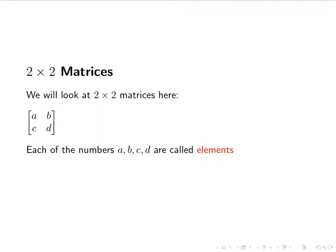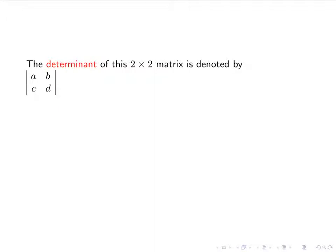Later on, we're going to look at a 3 by 3 matrix, which will have 9 elements. What we're going to do first is look at what's called the determinant of a matrix. The determinant looks like the same thing as a matrix, except instead of brackets, it looks more like absolute values.